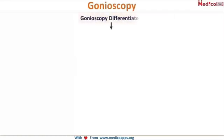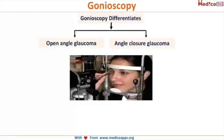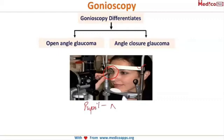Gonioscopy differentiates between open angle and angle closure glaucoma. The patient is made to sit on the slit lamp, and the gonioscope is placed after anesthetizing the eye with a local anesthetic. The procedure is performed in dimmed light conditions because the pupil needs to be of normal size — the pupil should not be dilated, otherwise gonioscopy cannot be performed.